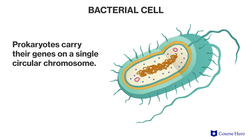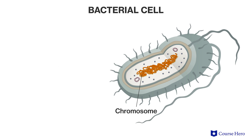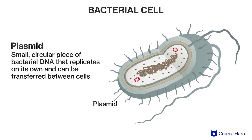Prokaryotes carry the genes on a single circular chromosome, unprotected in the gel-like cytoplasm filling the interior of the cell. They may also carry some genetic material in plasmids. A plasmid is a small circular piece of bacterial DNA that replicates on its own and can be transferred between cells.